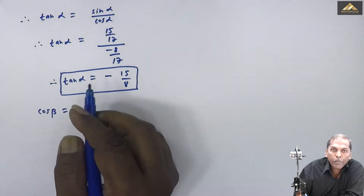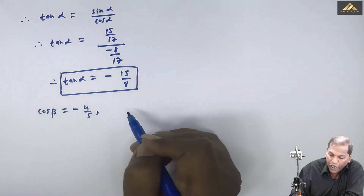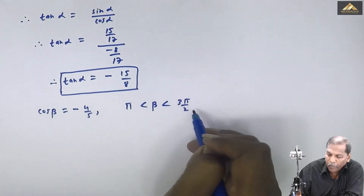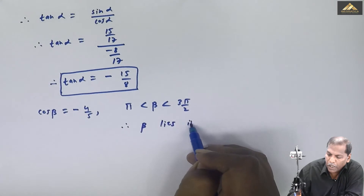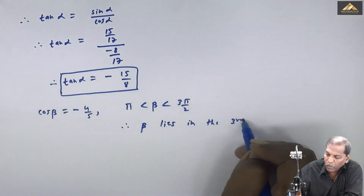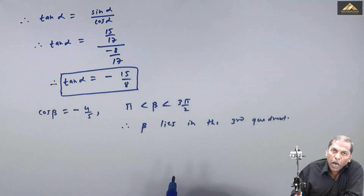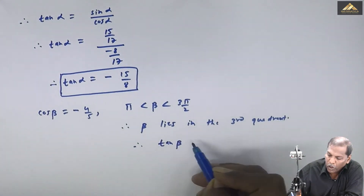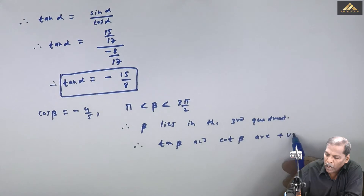Now for cos β = -4/5, with π < β < 3π/2, β lies in the third quadrant. For the third quadrant, only tan θ and cot θ are positive; all other trigonometric functions are negative. Therefore tan β and cot β are positive.